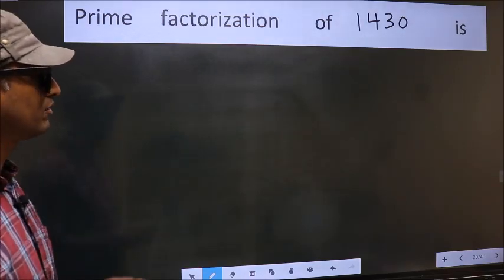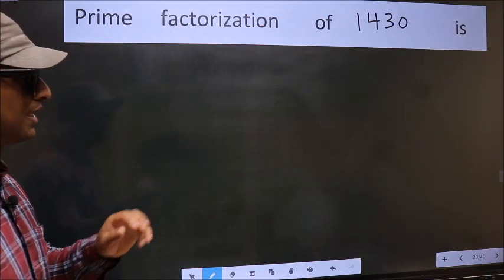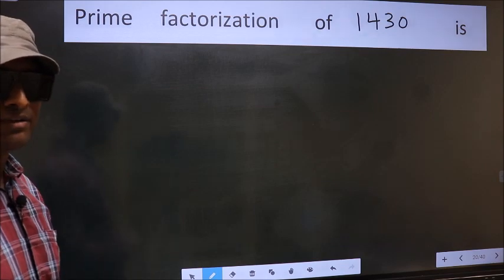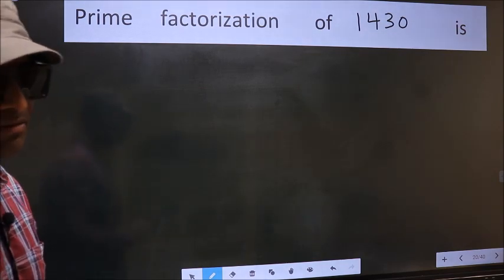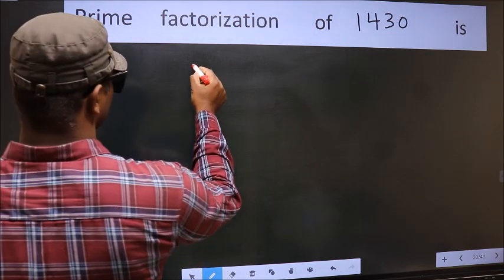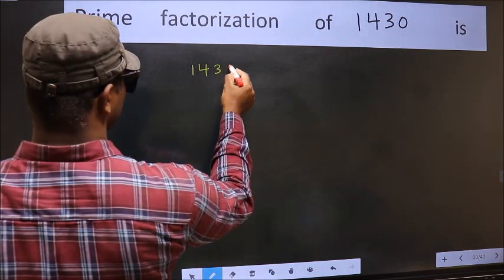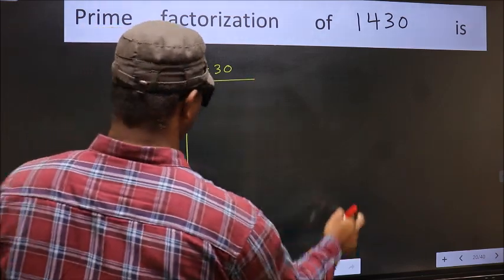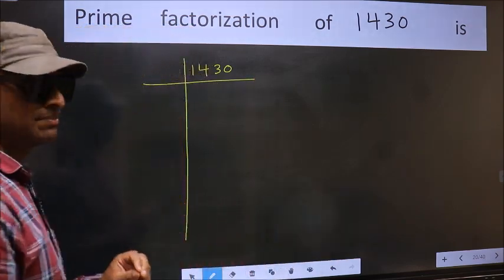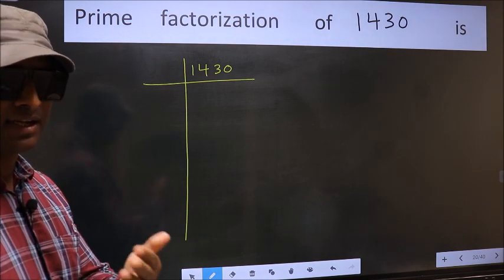Prime factorization of 1430. To do prime factorization, first we should frame it in this way. 1430. This is your step 1. Next.